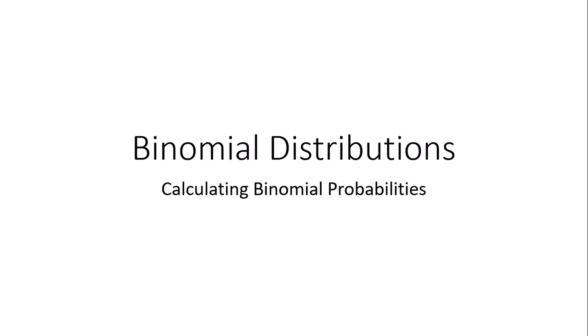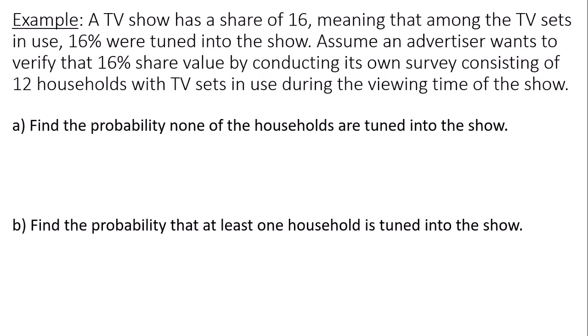This is a video on how to calculate binomial probabilities. A TV show has a share of 16, meaning that among the TV sets in use, 16% were tuned into the show. Assume an advertiser wants to verify that 16% share value by conducting its own survey consisting of 12 households with TV sets in use during the viewing time of the show.